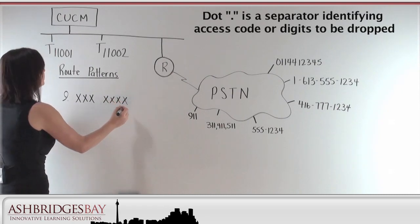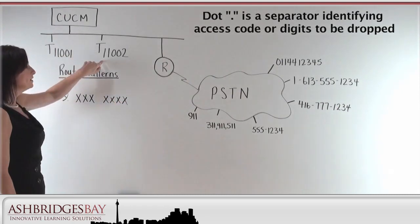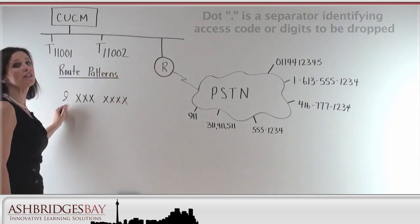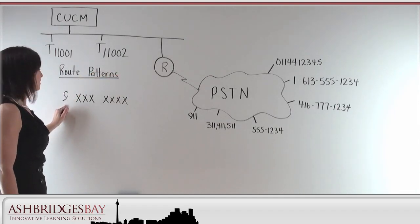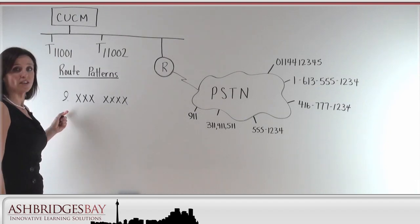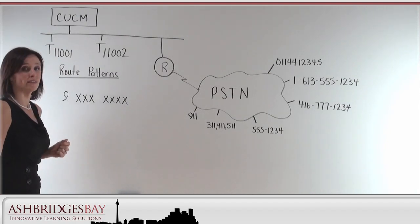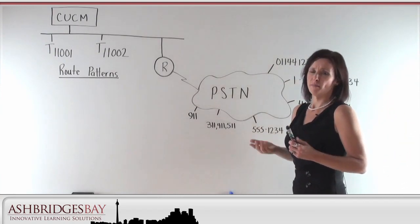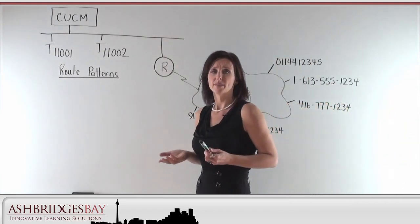Now, when I dial from 11,001 to 11,002, I don't match that pattern. There's no nine there. So, what does that tell you about internal extensions? That they can't start with a nine. That's an important thing to remember. We want to build up a set of patterns that let us call anywhere without a delay.